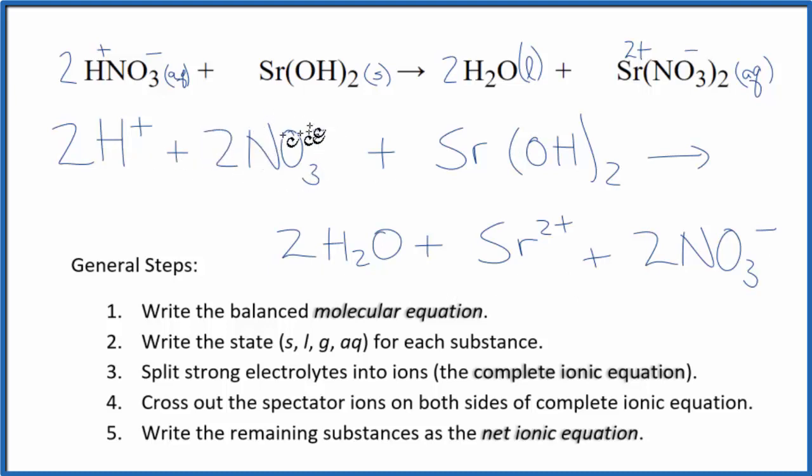I see nitrates, two nitrate ions here, and two nitrate ions here. Cross them out. But everything else is unique. That makes this the net ionic equation for HNO3 plus Sr(OH)2.